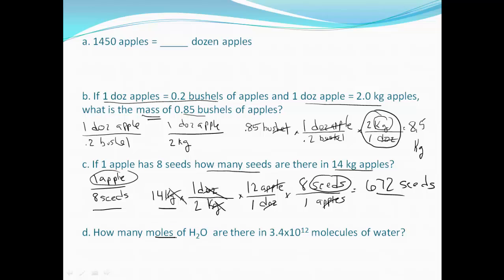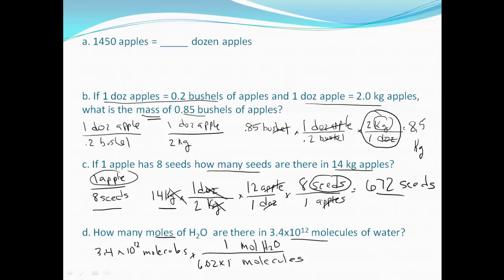We're going to go back to the idea of moles and molecules. Starting with 3.4 times 10 to the 12th molecules of water. We want molecules in the denominator and we're converting to moles, so moles goes in the numerator. One mole is equivalent to 6.02 times 10 to the 23rd molecules, so molecules cancel.